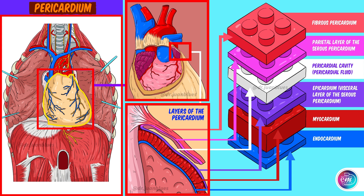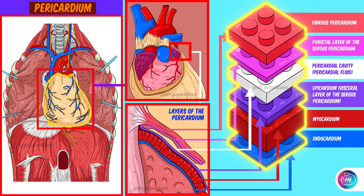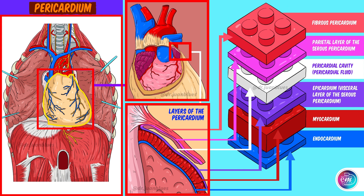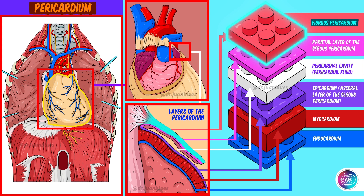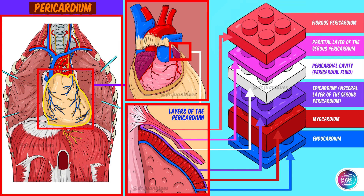To show this in a simple and fun way, let's use LEGO to represent the layers of the pericardium and the heart, from the most superficial to the deepest, starting with the pericardium. First, we have the fibrous pericardium, the outermost layer of the pericardium. Then we have the serous pericardium, which is divided into two layers. There is the parietal layer of the serous pericardium, and note how it is attached to the inner side of the fibrous pericardium.